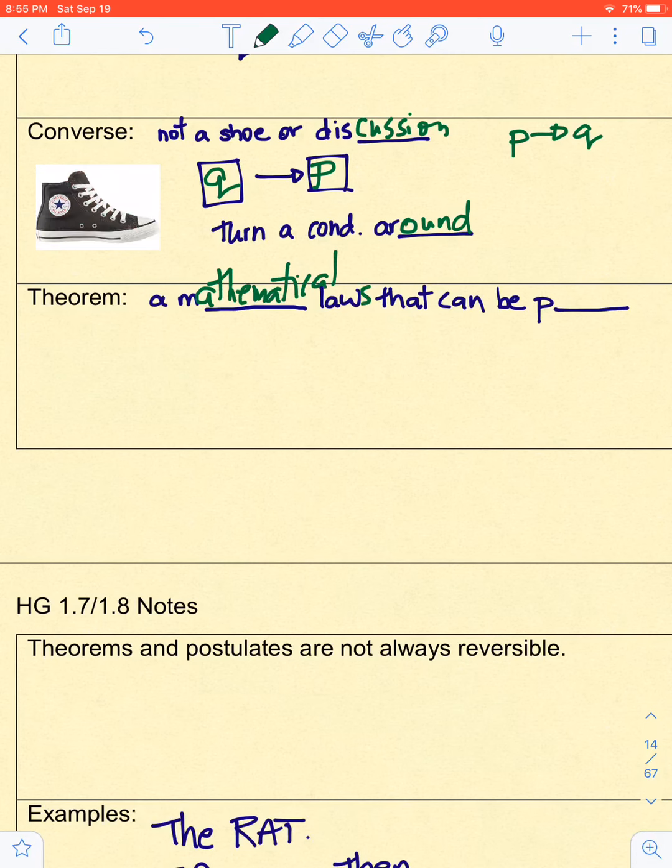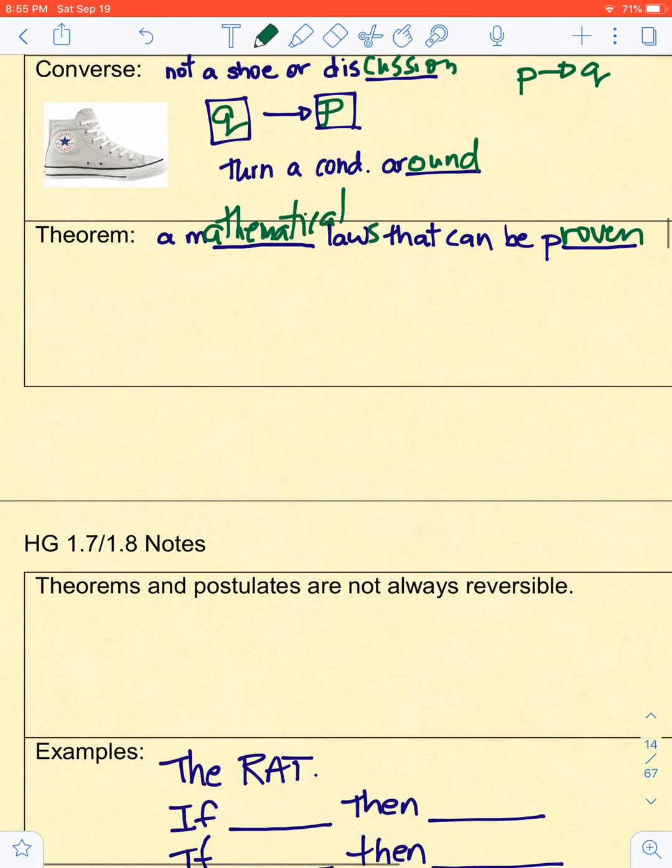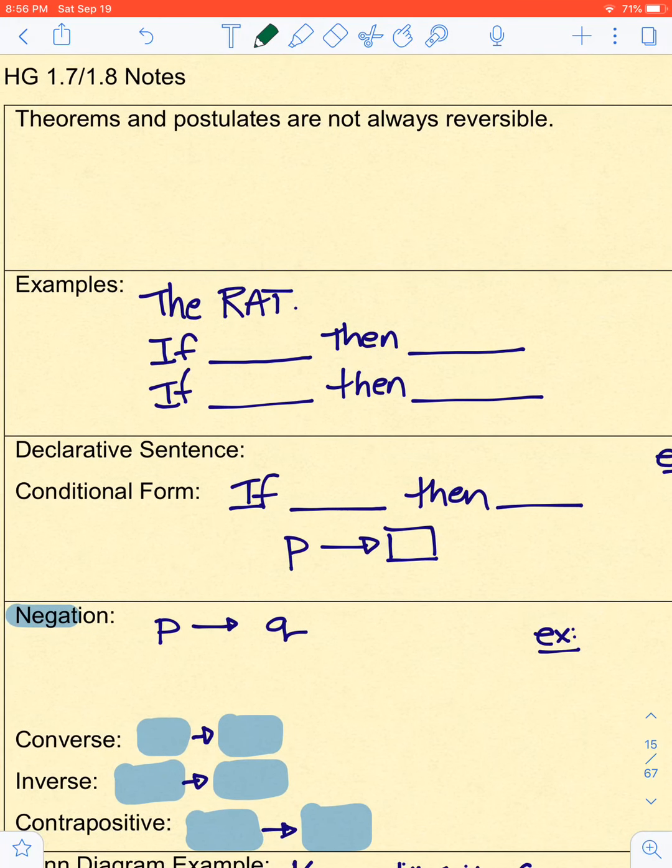Page two. Theorems and postulates are not always reversible. Underline that word, not. Hugely important. So, if a theorem says if P then Q, then you can't necessarily flip it around. Sometimes you can. We'll talk about those. We give them special names. Here's a classic example.